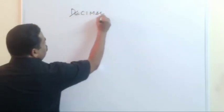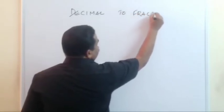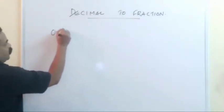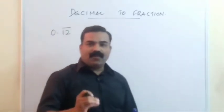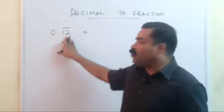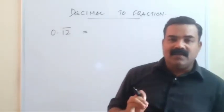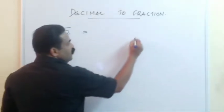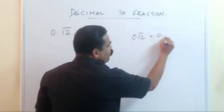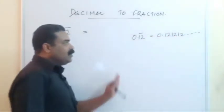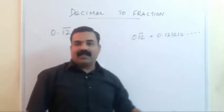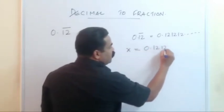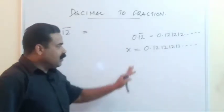Let us start with an example. For example, 0.12 bar — you want to convert it into a fraction. The bar indicates the digits on which the bar is given are repeating. So 0.12 bar means 0.12121212 continuing. Let us take this equal to x, so x = 0.12121212 and so on. This is the method we learned in school.